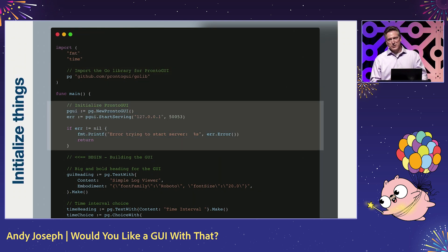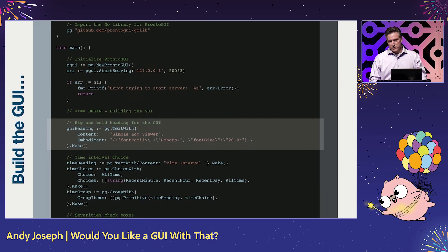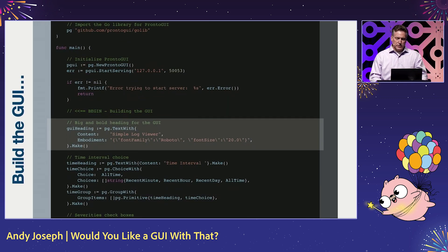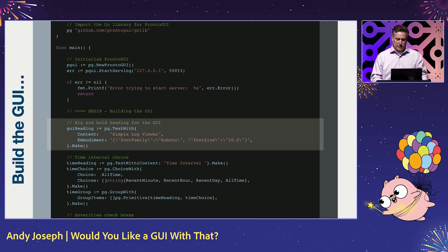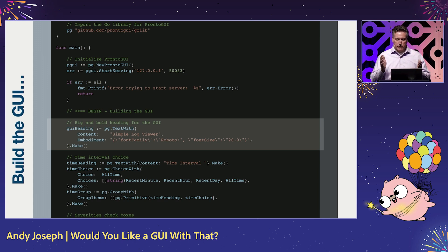The first thing we do is initialize Pronto GUI, then establish a local endpoint for the application to connect to. Next, we start building our GUI. We create a text item at the top and give it some embodiment information to stylize it. The common pattern here is to specify the primitive and then the options for the primitive.